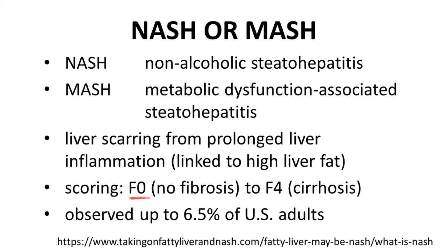F0 equates to no fibrosis, while F4, the highest score, indicates advanced progression and cirrhosis. ResDifera is approved for patients with scores of F2 or F3, which is considered to be moderate to severe fibrosis. NASH or MASH represents an unmet medical need and affects up to 6.5% of all adults in the United States.